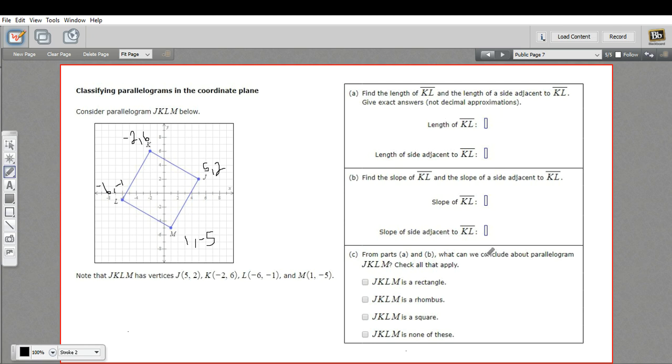So KL, this side right here, how do we find the length of that side? Well, since this is plotted in the coordinate plane, we can just calculate the distance between these two points, K and L. To do that, we'll use the distance formula. Remember, the distance formula is the square root of the difference of the x-coordinates squared plus the difference of the y-coordinates squared.